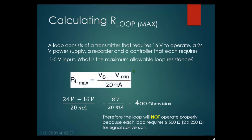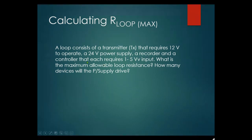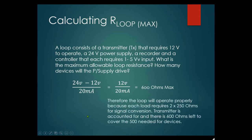Second example: a loop has a transmitter requiring 12 volts to operate, a 24 volt power supply, a recorder and a controller each requiring a voltage input across 250 ohm resistors. Maximum loop resistance: (24V − 12V) ÷ 0.020A = 600 ohms. Therefore the loop will operate properly since each load requires 250 ohms — two loads equals 500 ohms, which is below the 600 ohm maximum.